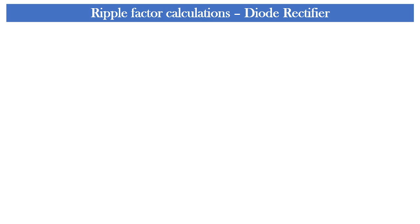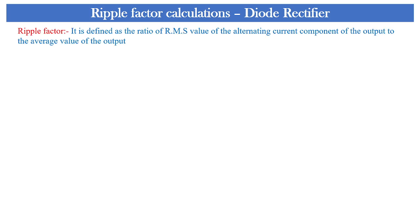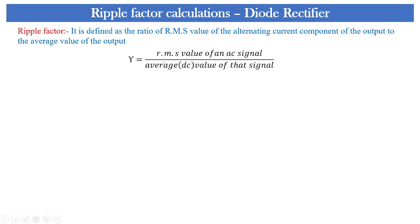The ripple factor is defined as the ratio of the RMS value of the alternating current component of the output to the average value of the output. It is denoted by gamma (γ), which equals the ratio of the RMS value of the AC signal to the average or DC value of that signal. Let us consider this as equation 1, and also consider a current signal or current waveform.